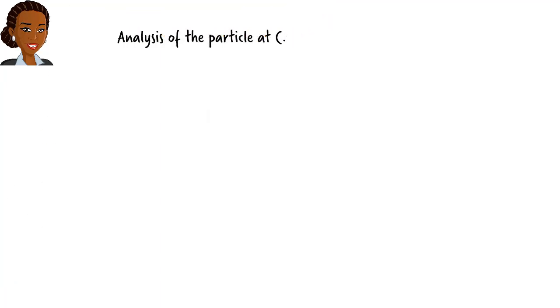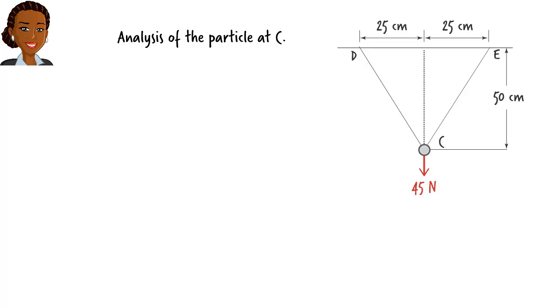Particle C is subjected to three forces. A downward force of 45 Newtons, the force in segment CD, and the force in segment CE. Given these distances, we can determine the angle between each rope segment and the vertical axis. Since the two angles are equal, let's use the same label for both. Tangent of beta equals 25 over 50, so angle beta equals 26.57 degrees.